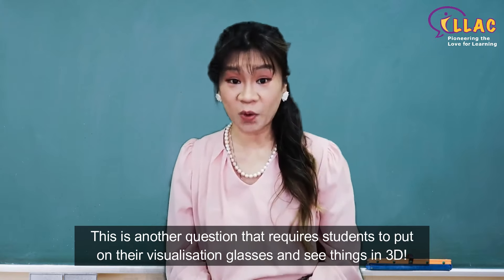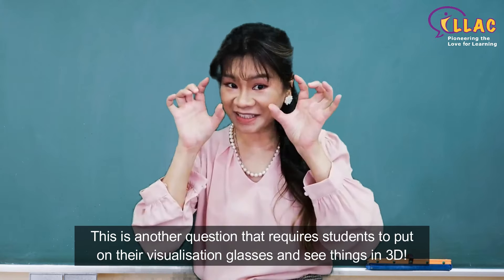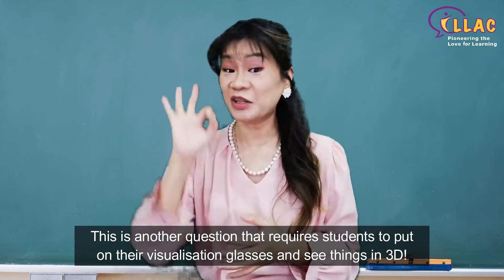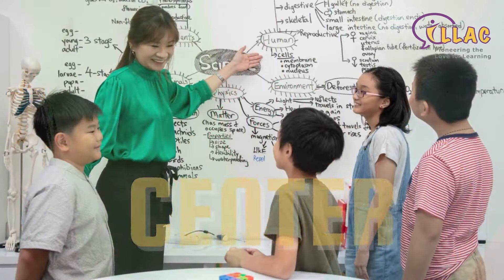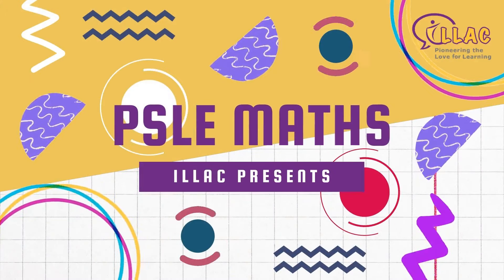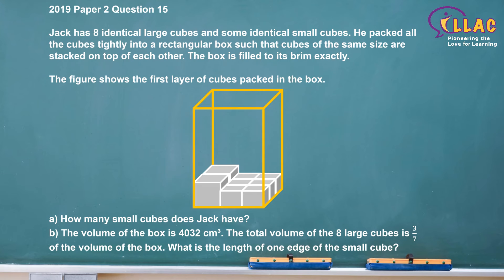This is another question that requires students to put on their visualization glasses and see things in 3D. Jack has 8 identical large cubes and some identical small cubes. He packed all the cubes tightly into a rectangular box, such that cubes of the same size are stacked on top of each other. The box is filled to its brim exactly.